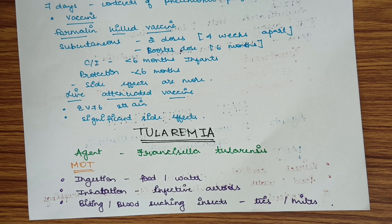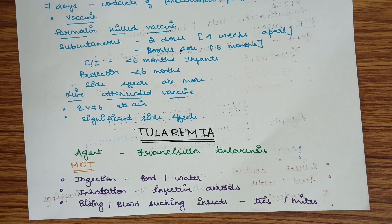Today we will see a small topic which is tularemia. This is a zoonotic infection coming under miscellaneous infections. The agent of tularemia is Francisella tularensis. The mode of transmission may be ingestion of infected food and water, inhalation of infected aerosols, or biting or blood-sucking insects such as ticks and mites.